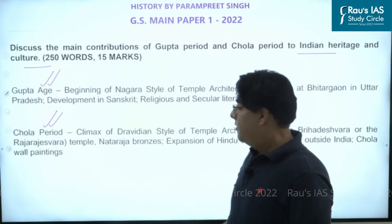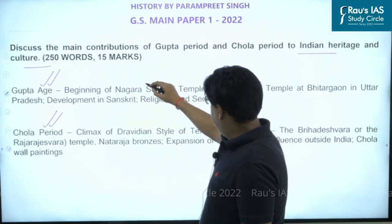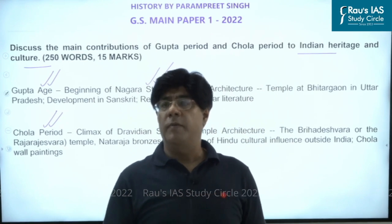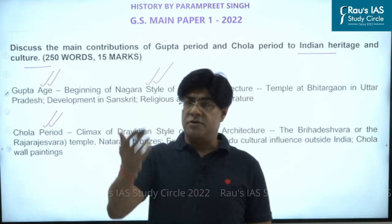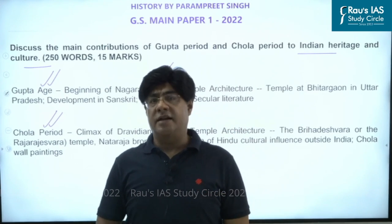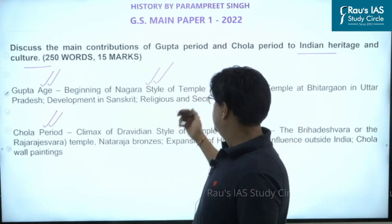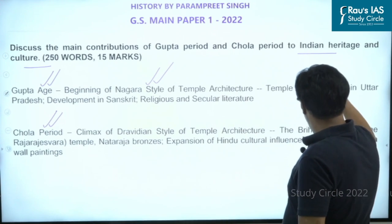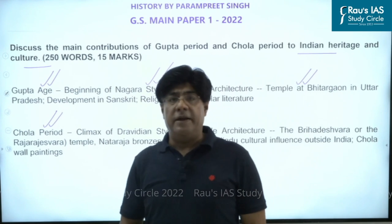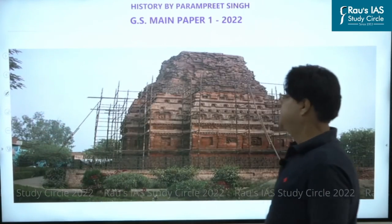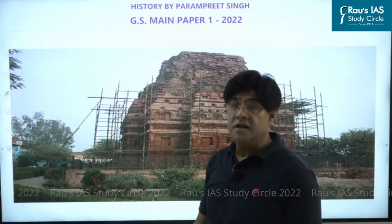We know that the beginning of the Nagara style of temple architecture is from the Gupta period. There are two main forms of temple architecture: the Nagara style associated with the north, and the Dravida style associated with the south. The beginning of the Nagara style was during the Gupta period. One example is the Gupta period temple at Bhitargaon in modern-day Uttar Pradesh, one of the earliest Nagara style temples in India.